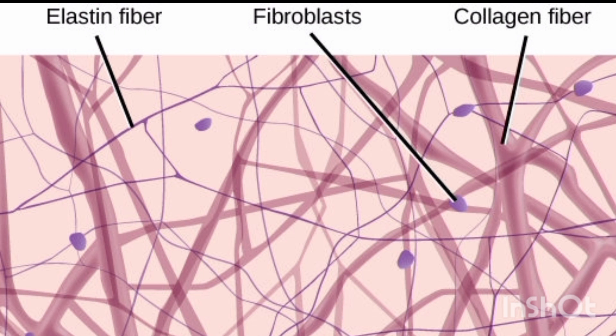First of all, the loose connective tissue. It is widely distributed in the body. It is a packing and anchoring material of the body, and acts as an embedding medium for many structures including blood vessels and nerves. It binds other tissues, organs, and components together, allowing a considerable degree of flexibility and mobility between such parts. It also forms the supporting framework, the stroma, of most organs.